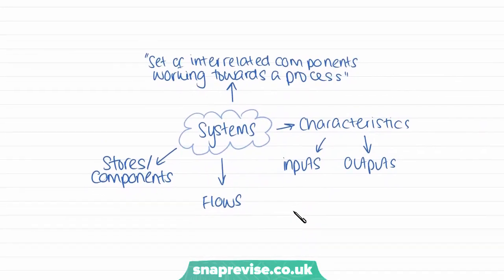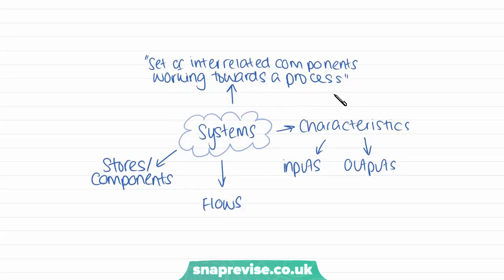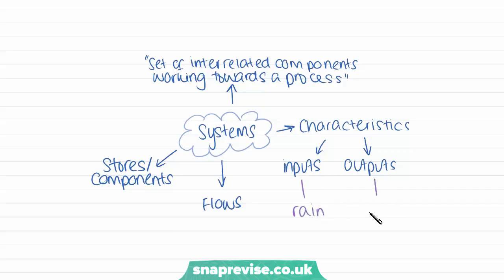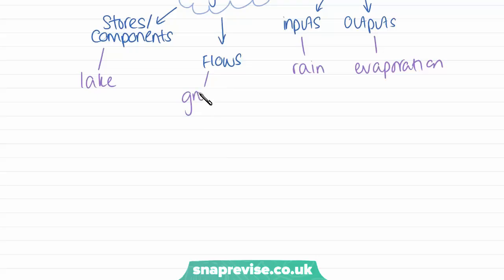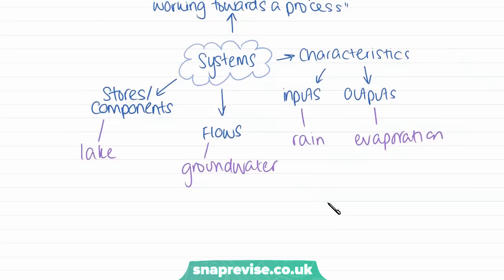So what is a system? A system is a set of interrelated components working together towards a process. Within a system, we have stores and we also have flows between the stores. The other characteristics we have are inputs and outputs — so these are the four major characteristics of a system. For example, in the water cycle, we have our inputs, which are things like precipitation or rain, and our outputs are things like evaporation. The stores would be, for example, a lake. And a flow would be something like groundwater flow or stem flow — groundwater flow being the seeping of water through the ground.